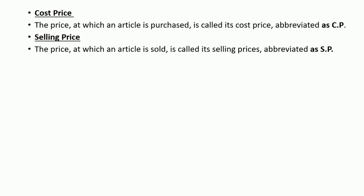Whenever you take account of cost price and selling price, you will get the profit or loss. If the cost price is more and selling price is less, that is a loss. But if the selling price is more and cost price is less, then obviously it's a profit. To calculate the profit, we need selling price minus cost price. So SP minus CP will give you profit or gain. In this case, remember selling price is greater than the cost price.